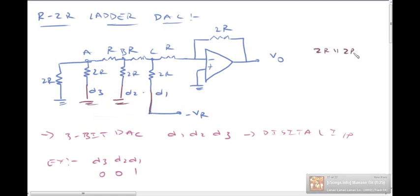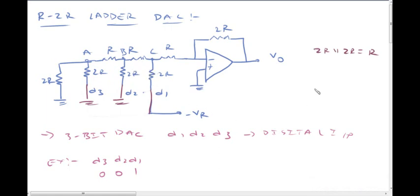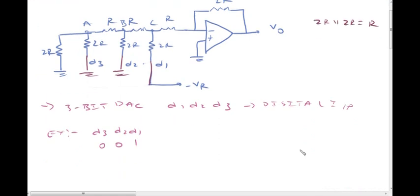Negative reference voltage Vr is applied. D3 is in parallel with 2R. The equivalent resistance R is parallel to 2R, giving R. So R plus R is parallel to 2R. We can now reduce the circuit diagram using this step.